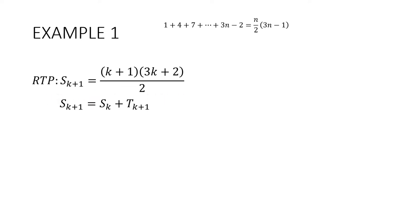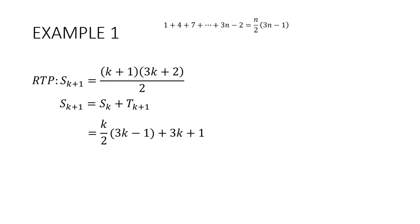The sum of the first k plus 1 terms must be equal to the sum of the first k terms plus the k plus first term. We know this — this is our assumption. We're assuming the sum of the first k terms is equal to k over 2 times 3k minus 1. The k plus first term I get by putting k plus 1 into the nth term formula. Pause for a second and make sure that makes sense. Now my job is to get from here to the required result.